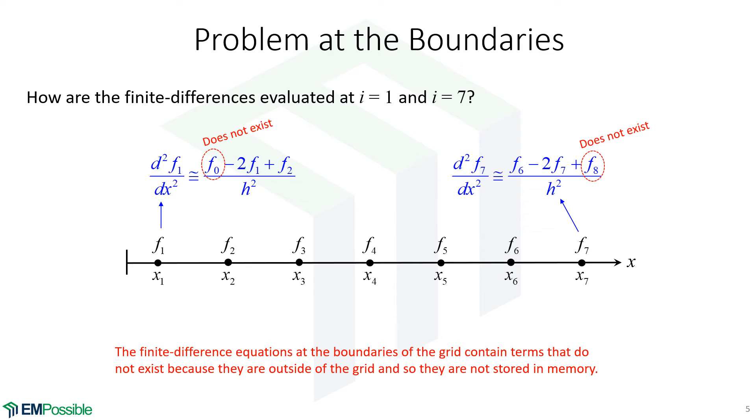That's because our finite difference equations at the edge of the grid are reaching to the outside. That's why this problem happens. So that's the problem at the boundaries, and there's lots of ways to handle this. That whole family of solutions of how to handle that are called boundary conditions. Not to be confused with boundary conditions when we took electromagnetics or physics or differential equations. This is something a little bit different. This is a numerical problem that happens at the edge of grids to numerical methods.